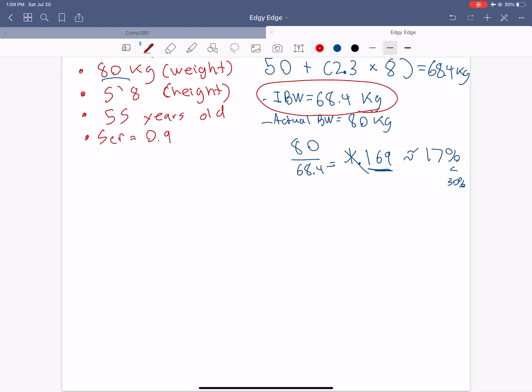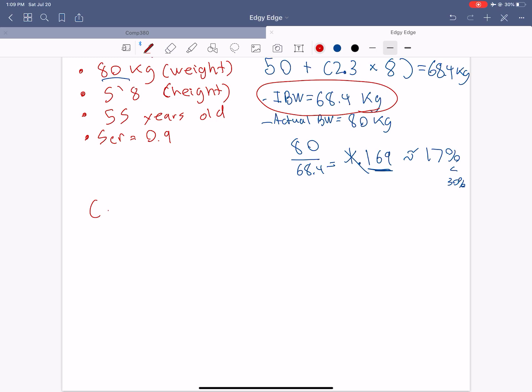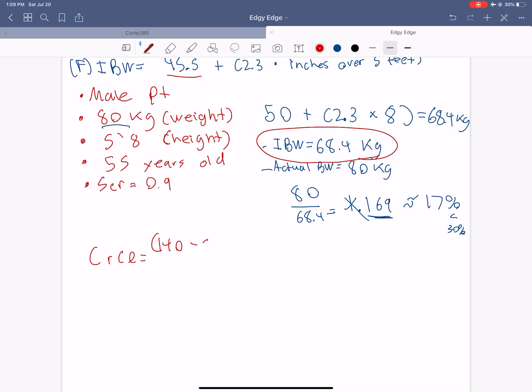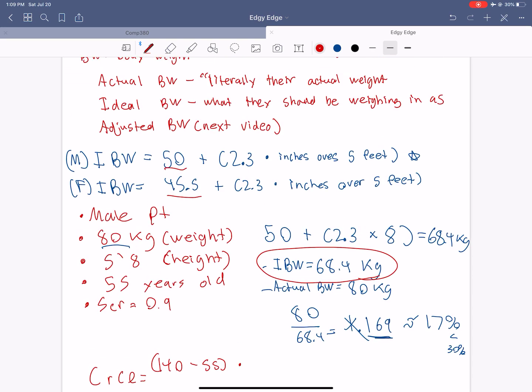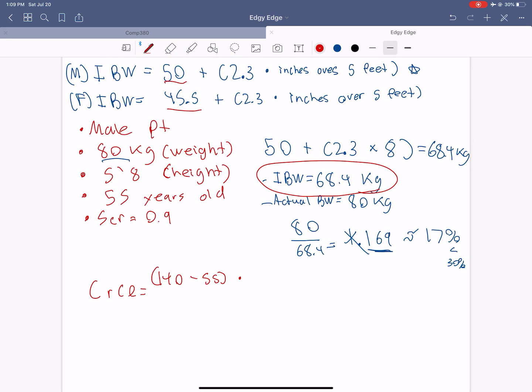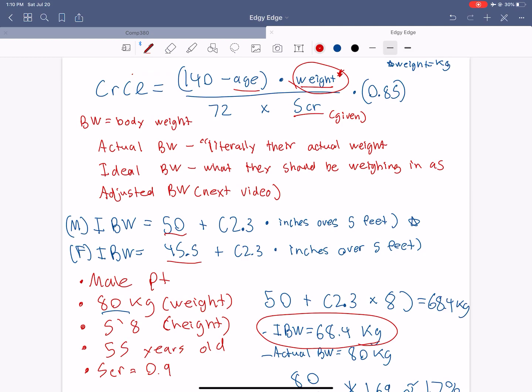And let's do a quick calculation of the creatinine clearance. So creatinine clearance, like we talked about, is 140 minus the age, the age of this patient is 55, times their weight. And like we talked about, since their weight is less than 30% of their actual, so we're going to use their ideal body weight. So it's going to be 68.4 over 72 times serum creatinine, which is 0.9. And since they're not female, we don't worry about the 0.85.